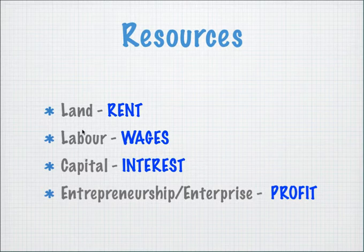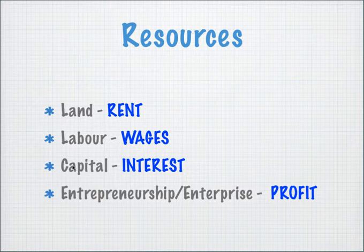Someone who rents out labor will receive wages in return. The next resource is capital. Capital here doesn't refer to financial capital — economists are actually referring to physical capital such as machinery, inventories, capital goods, factories, and so on. Those are physical capital and they earn interest, or in some cases rent as well.